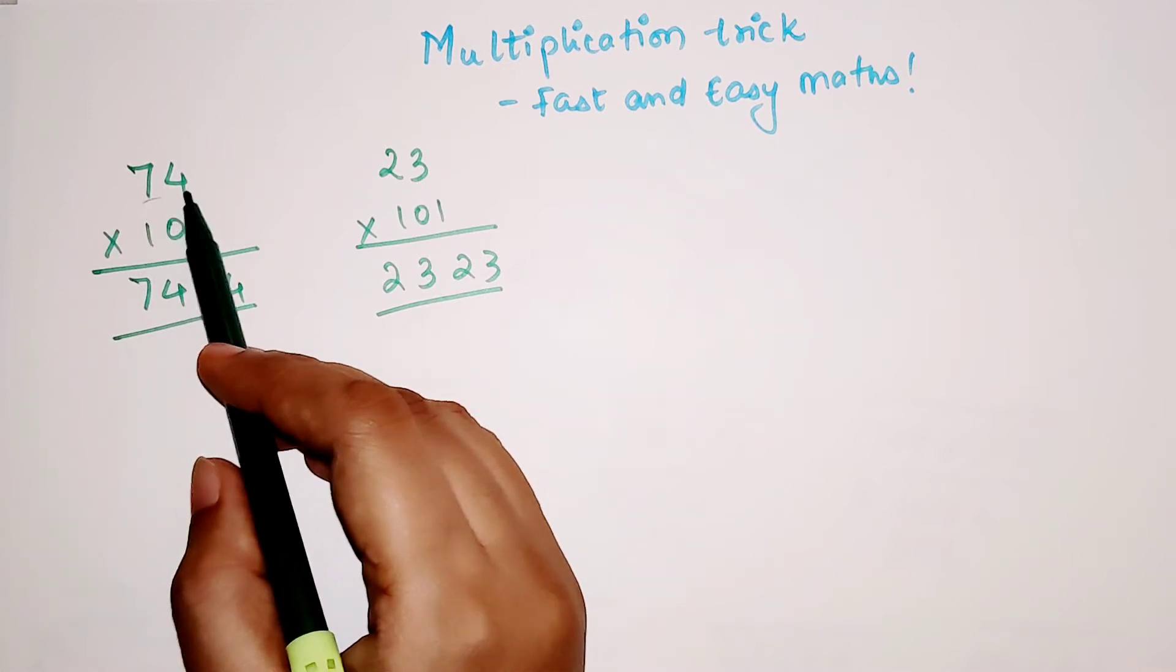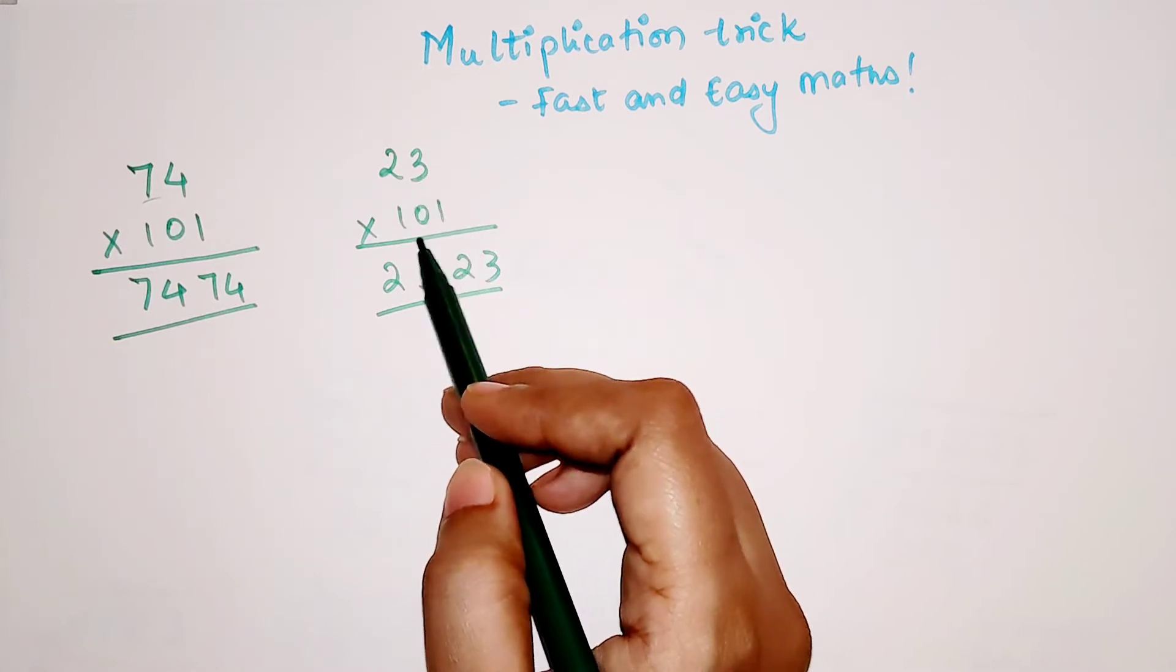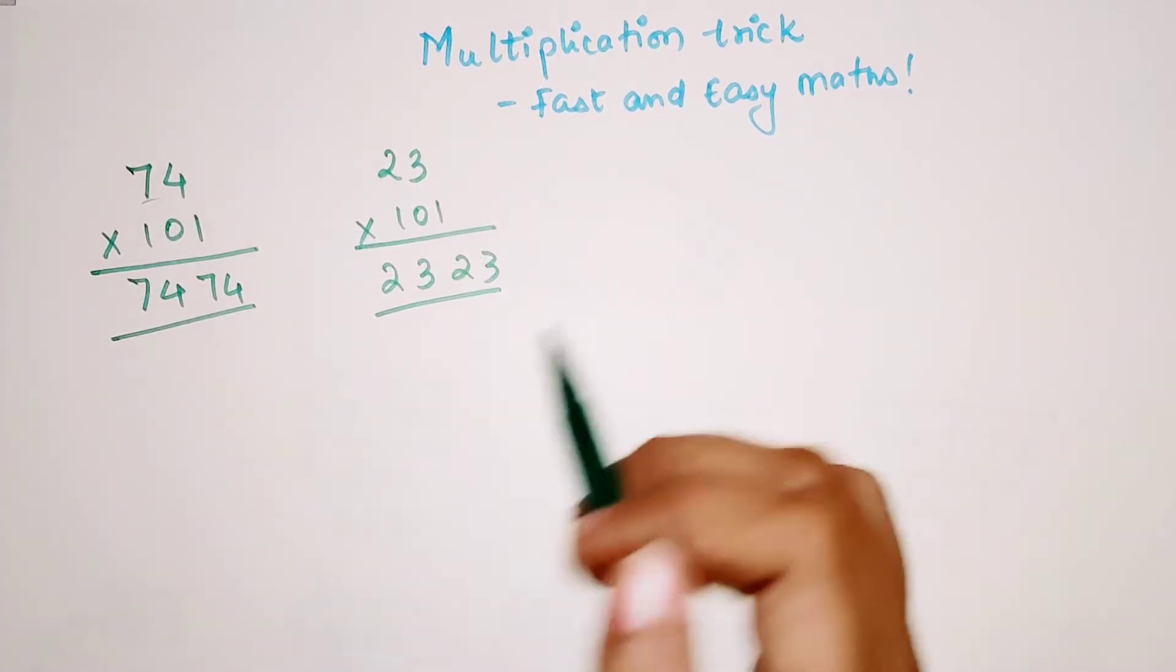So here you saw it was a 2 digit and here it was 3 digit. Here again it was 2 digit, here also this was 3 digit.